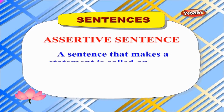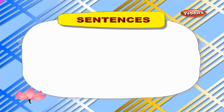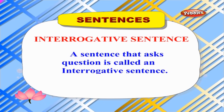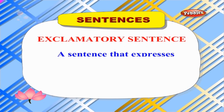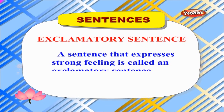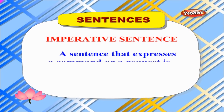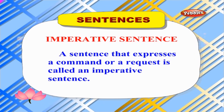An assertive sentence is a sentence that makes a statement. An interrogative sentence is a sentence that asks a question. An exclamatory sentence is a sentence that expresses a strong feeling. An imperative sentence is a sentence that expresses a command or a request.